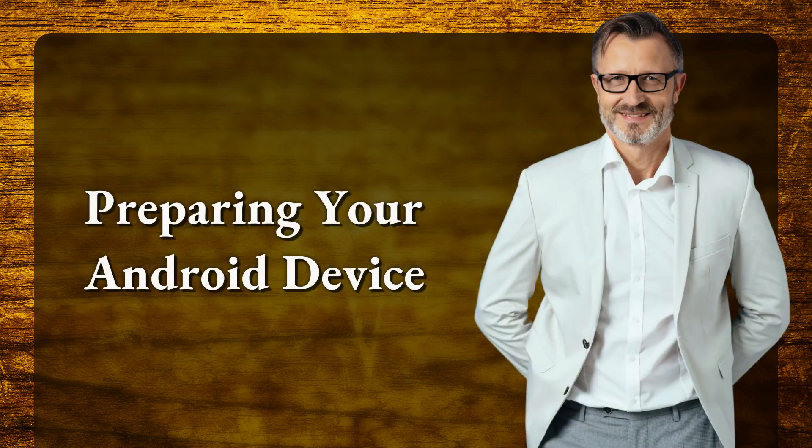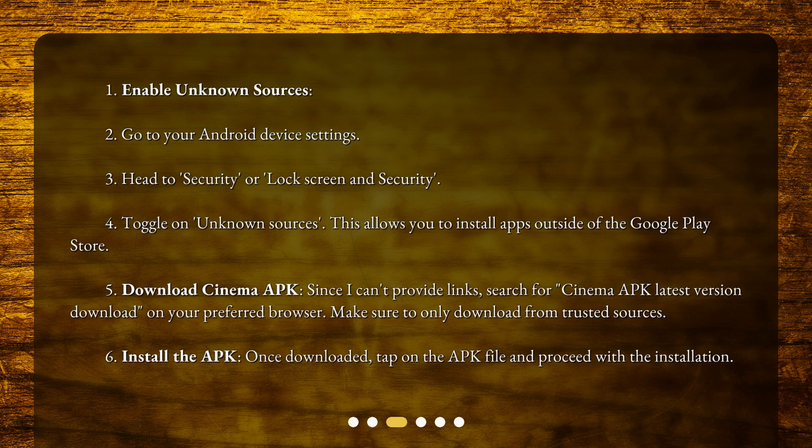First, prepare your Android device by enabling unknown sources. Go to your Android device settings, then head to Security or Lock Screen and Security, and toggle on Unknown Sources. This allows you to install apps outside of the Google Play Store.